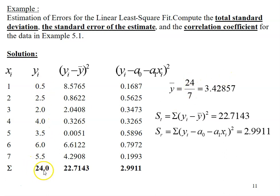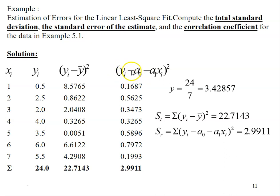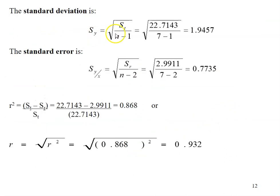The mean is 24 over 7, since you have 7 data points and their sum is 24. You add a column for (yi minus mean)², computing each value — for example, 2.5 minus 3.4286, then squared. Then you compute the residuals e for each point, which is the original y minus the predicted y from the regression line (a-naught plus a1·xi). Once you have all values, substitute them into the formulas for standard deviation and standard error of the estimate.